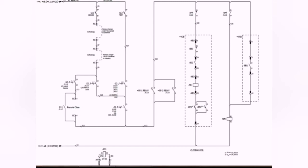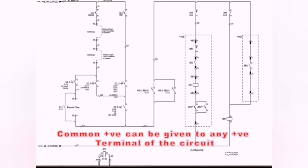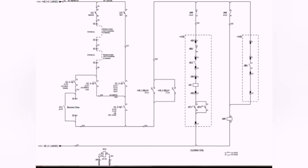Let's see in the schematic diagram. Common positive can be given to any positive terminal of the circuit as shown in the figure, or you can give it directly to the 110V DC positive supply.